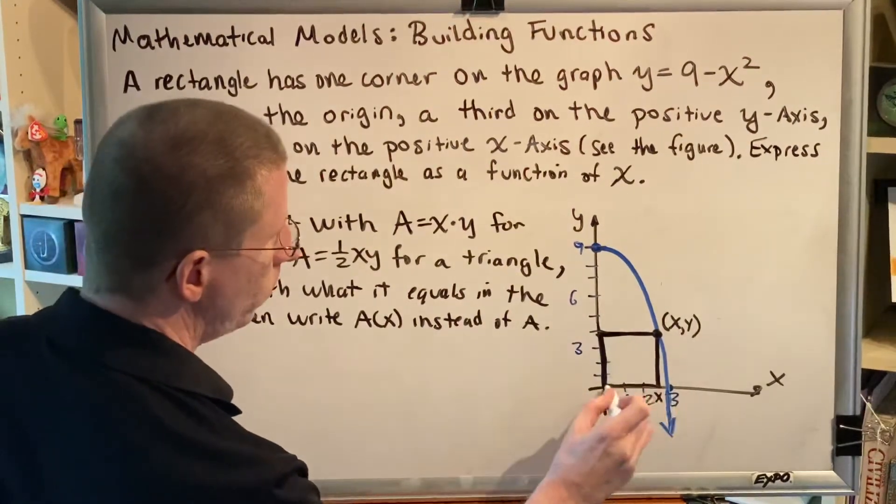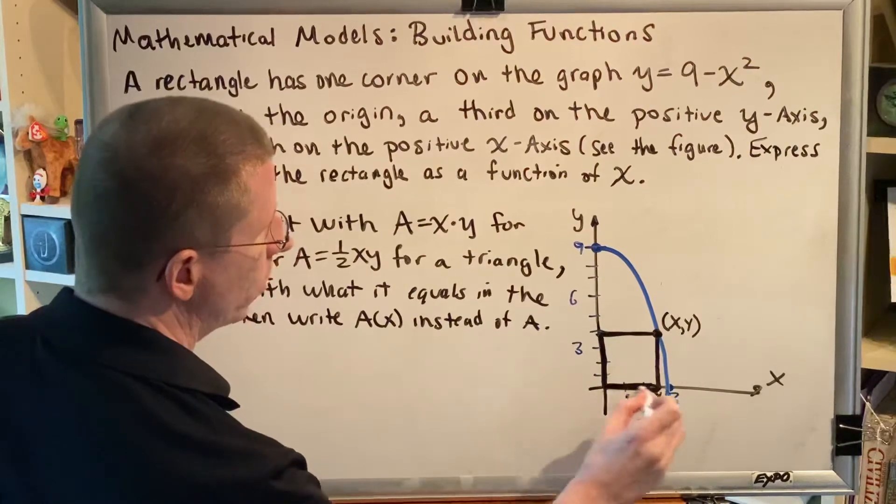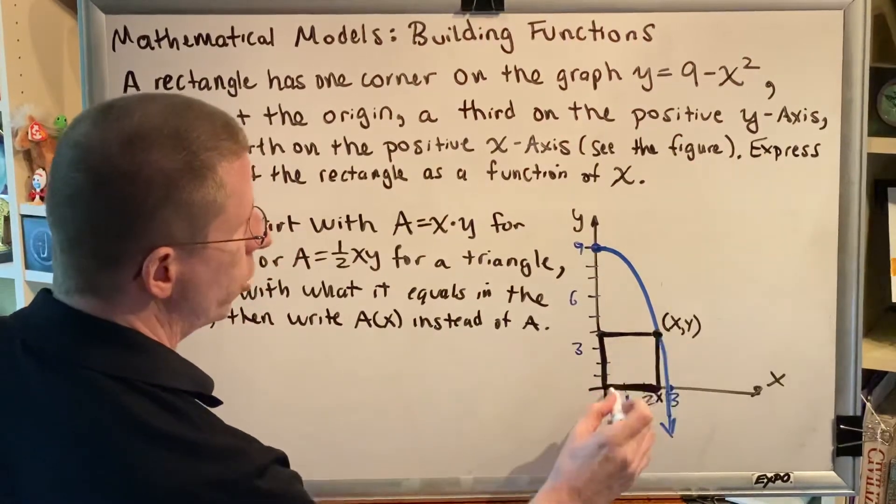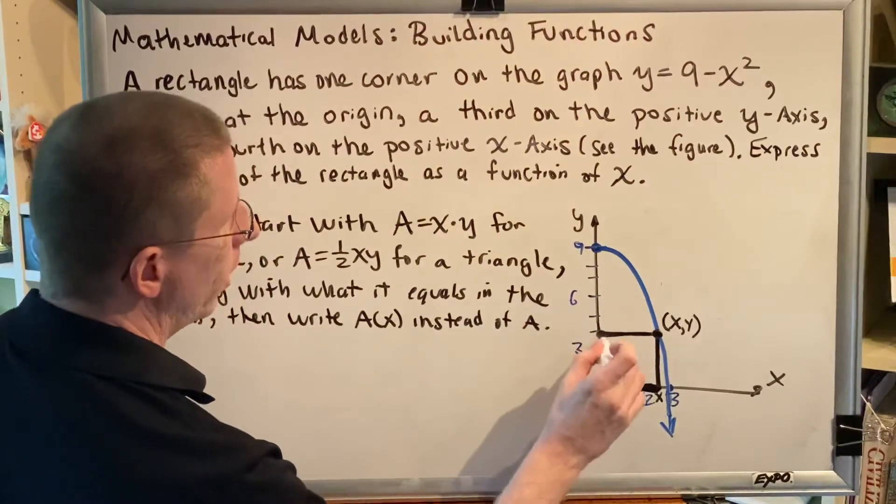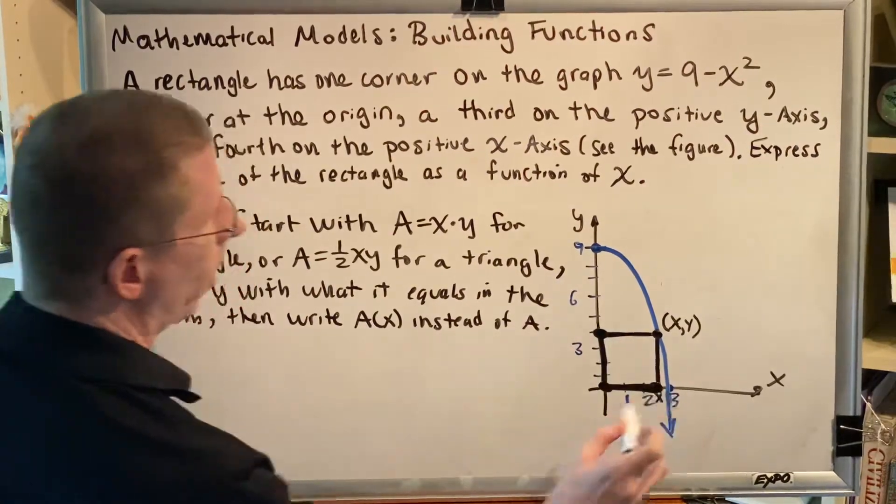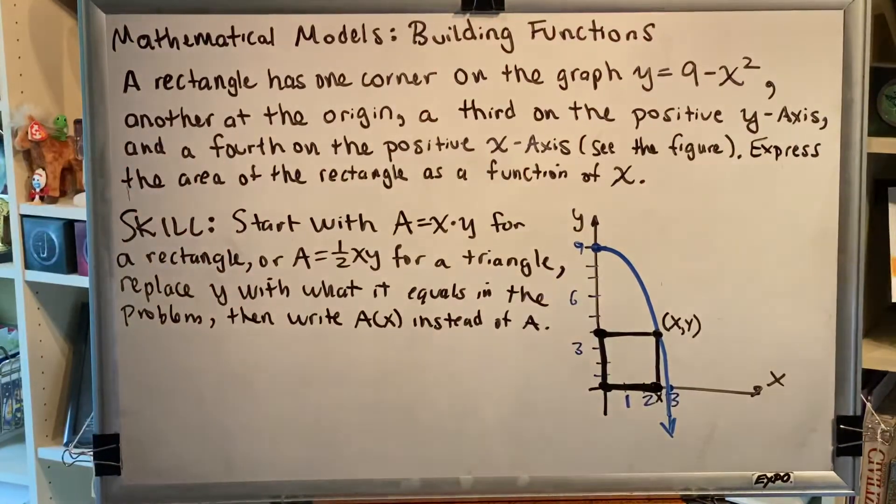So here's the rectangle that we're dealing with. The point on the function is the upper right corner, the origin is the lower left corner, here's the point on the positive y-axis, and here's the point on the positive x-axis. Express the area of this rectangle as a function of x.